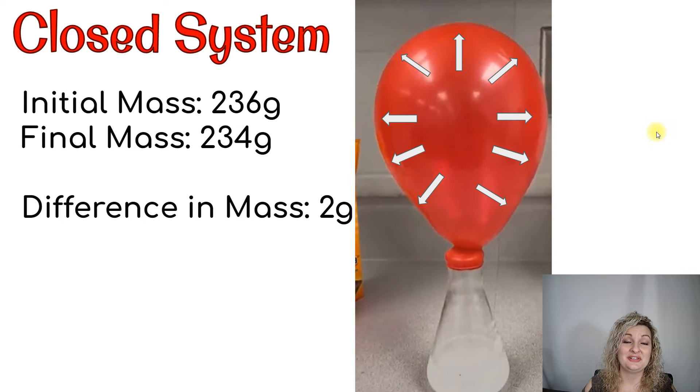Okay, so let's look at our closed system. We had an initial mass of 236 grams and a final mass of 234 grams. So we have a difference of two grams. Where in the world did it go? The law of conservation of mass says that it cannot be destroyed in this chemical reaction and I'm going to tell you it's still right there. I know this sounds weird because we just put it on the digital scale and it clearly did not say that, but it is.